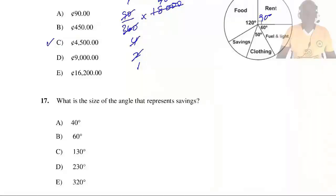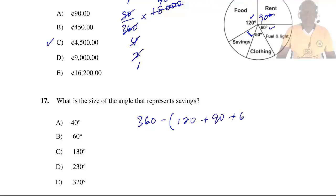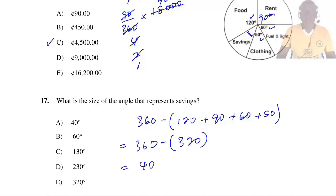Question 17: What is the size of the angle that represents savings? We calculate: 360 − (120 + 90 + 60 + 50) = 360 − 320 = 40 degrees. So the answer is 40 degrees, which is A.